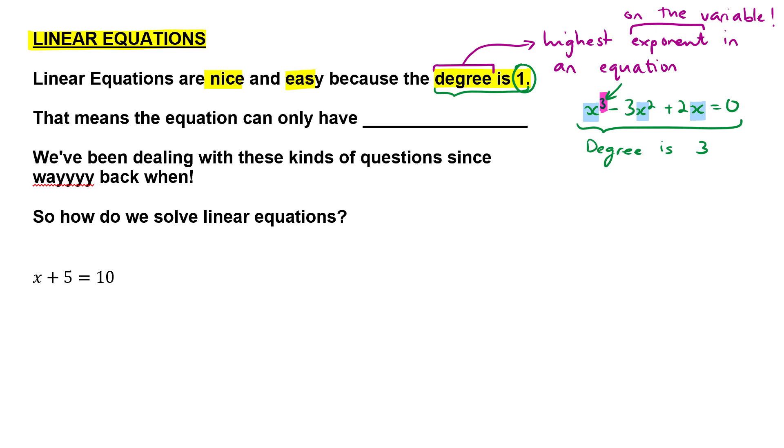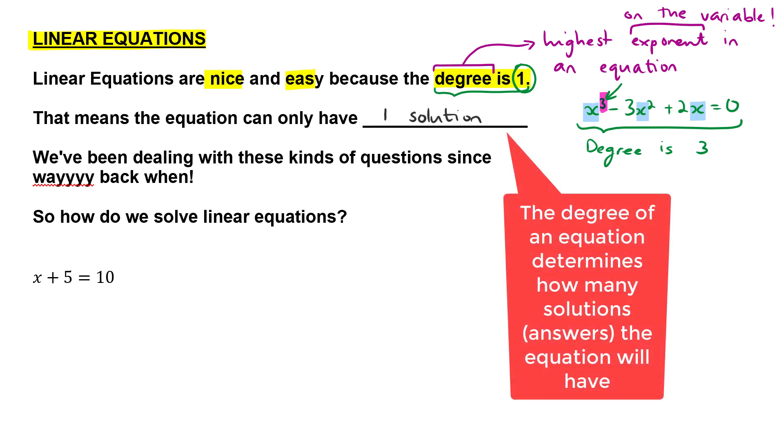And that makes it quite nice for us because when we've got a degree of 1, it means that we can only have one solution to the equation. So there's only one answer, unlike when we deal with a quadratic equation where we've got two answers. Or in this case, where we have a cubic equation with a degree of 3, we would have three solutions.